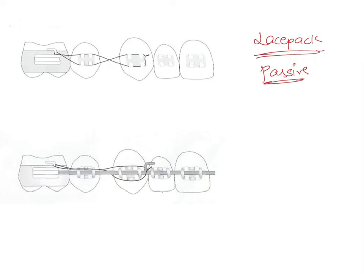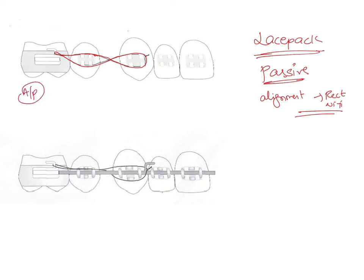Lace back looks completely different from a tie back. Here, only a ligature wire is present, wound around the hook of the molar tube. Unlike a tie back which bypasses the premolar, a lace back engages the premolar and the crown of the canine. This is given during the alignment stage up until the rectangular NiTi wire stage, for anterior-posterior anchorage control of the maxillary canine.